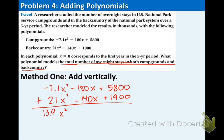Remember when you combine like terms the variable does not change, it's only the coefficient that changes. Next, in the middle we have negative 180 plus negative 140 that is negative 320x. And lastly, we have 5800 plus 1900 that is 7700. So, the vertical process is nice and quick and that completes that part.